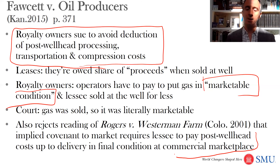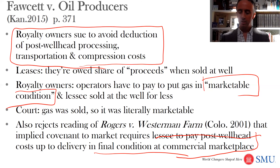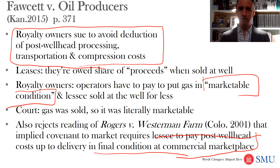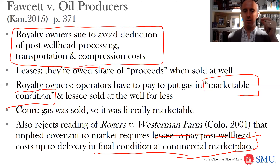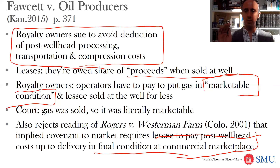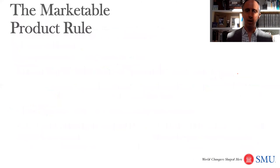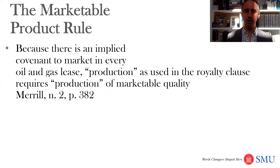The court also rejects the Rogers versus Westerman Farm implied reading that says the implied covenant to market requires the oil and gas company to pay all post-wellhead costs to get gas into a final condition at a commercial marketplace. One reading of Rogers versus Westerman Farm would be: you've got to do everything you can to bring it to a market where gas is sold all the time — you can't sell at a bargain-basement rate at the well. But the court says nope — it was literally sold, so they're paid proceeds when sold at the well, and that's all that the lease requires.